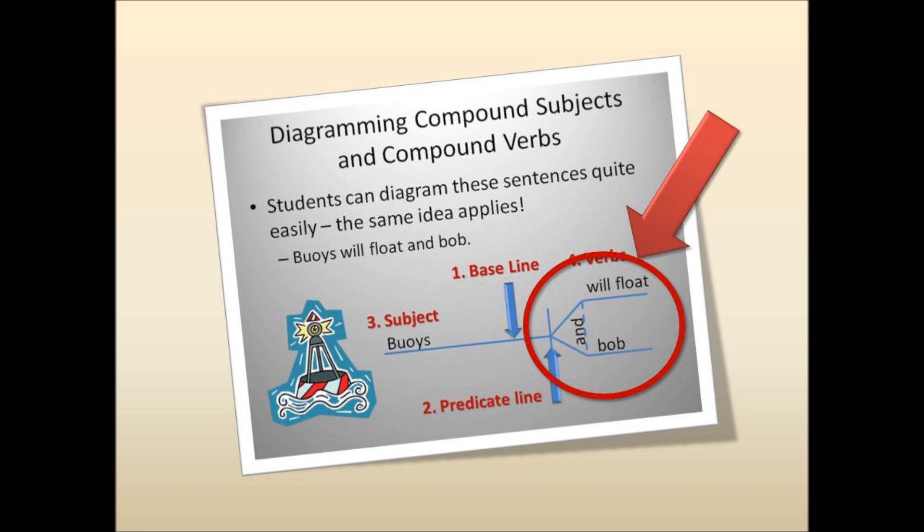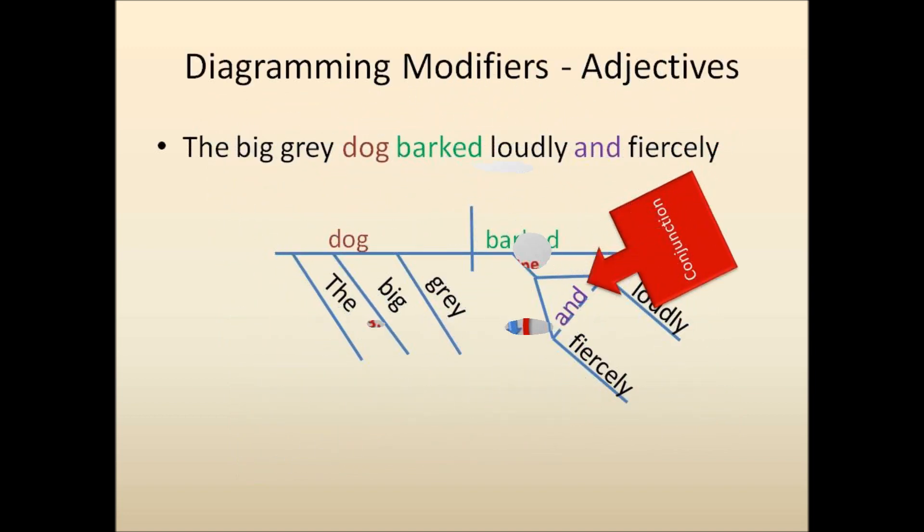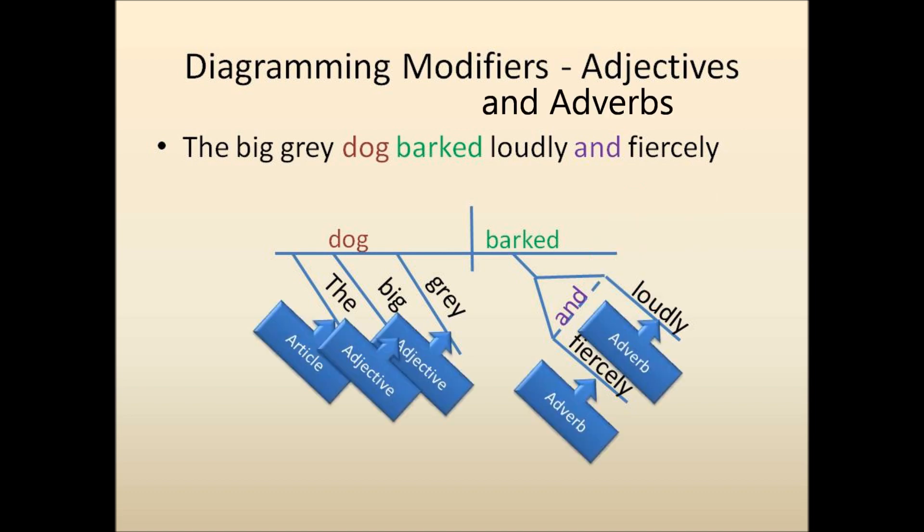For example, when you took a look at how it looked for a compound subject or a compound verb. But in this instance, it's simply the compound adverb. Then we have the adjectives and adverbs on a 45 degree angle under the words they modify. The compound adverb being in the house or rocket ship formation.